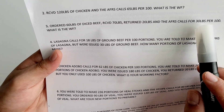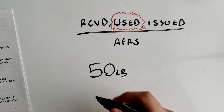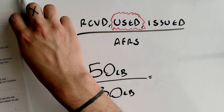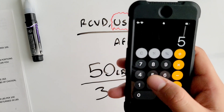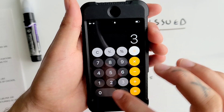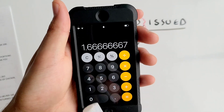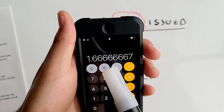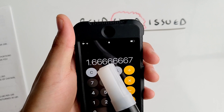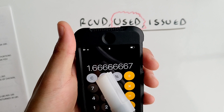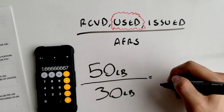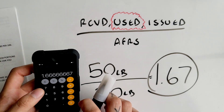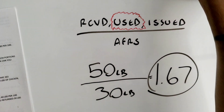Used is your number on top — 50 pounds. The AFRS calls for 30 pounds, so that goes on the bottom. Divide: 50 divided by 30 equals 1.6666. We always round to the hundredths place — the two numbers to the right of the decimal. Since the third digit is 6 (five or above), we round up, giving us 1.67. That is your final answer for problem three.